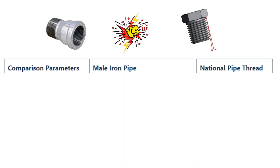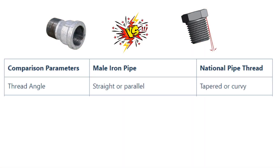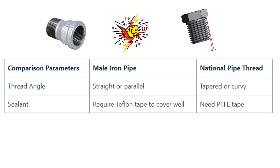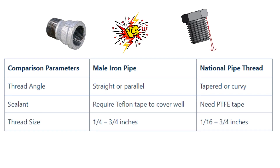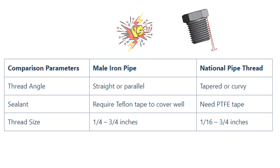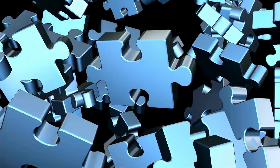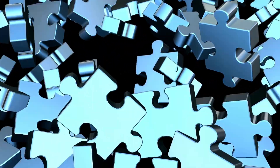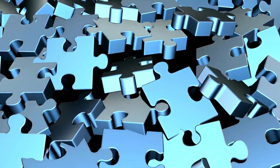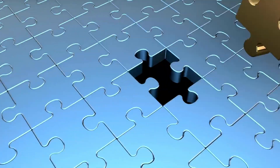These are the main variations that set them apart, as they work inversely in most sectors. Now you know all the comparing points between MIP versus NPT to select easily. Hopefully, after watching this video, your confusion will be cleared.